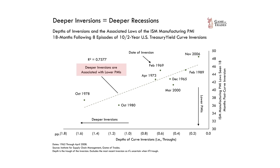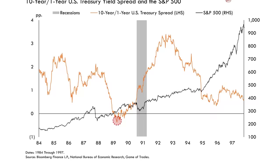This chart tracks the depth of inversions against how low manufacturing PMIs go. Manufacturing PMIs are a measure of economic activity, and deeper inversions generally lead to lower PMIs in the 18 months that follow. So it's not a big surprise that the shallow yield curve inversion of 1989 played out for a shallow recession in 1990.